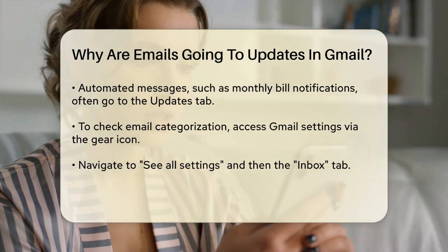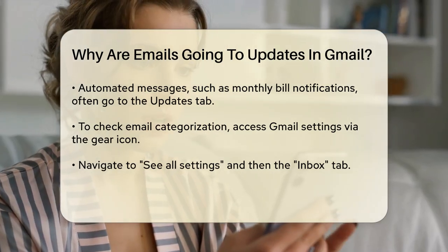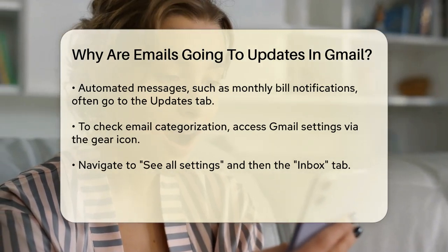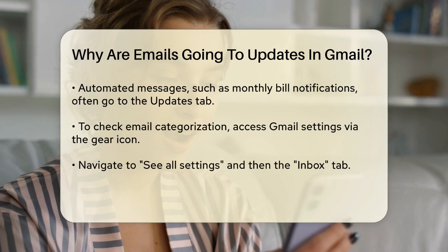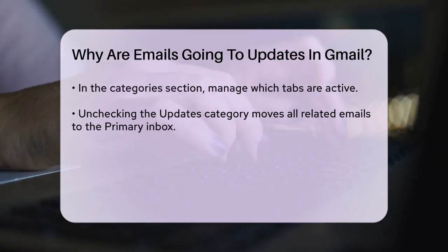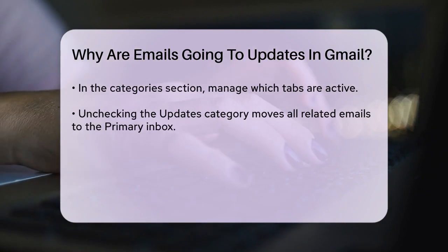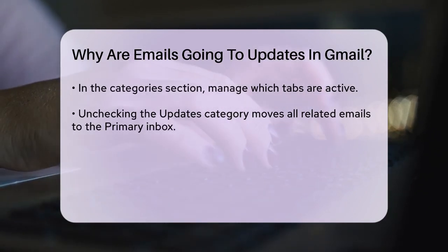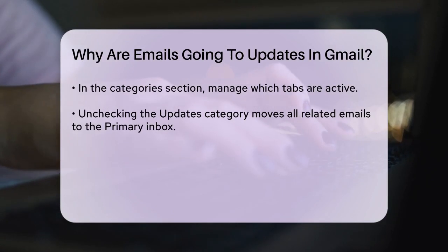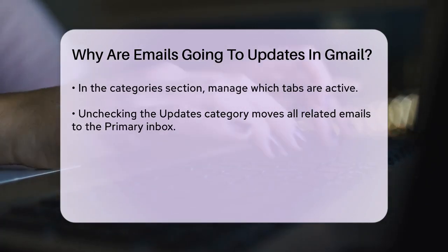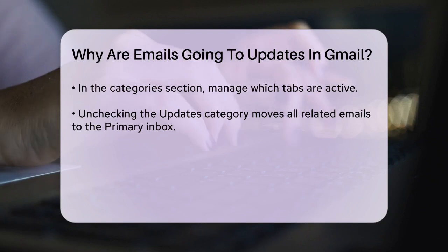To understand why specific emails are going into the Updates tab, you need to look at how Gmail categorizes emails. Go to your Gmail account and click on the Gear icon for Settings. Select See All Settings and then navigate to the Inbox tab. Here you'll see the Categories section where you can manage which tabs are active and which emails go into each tab.